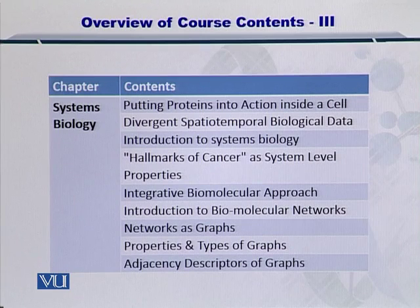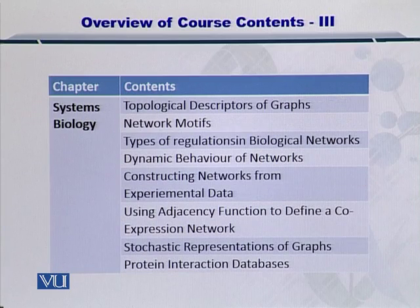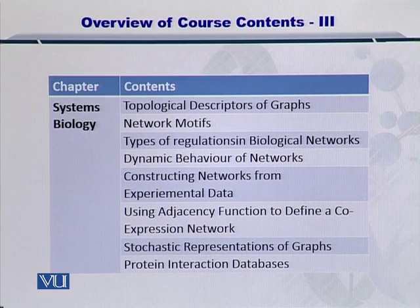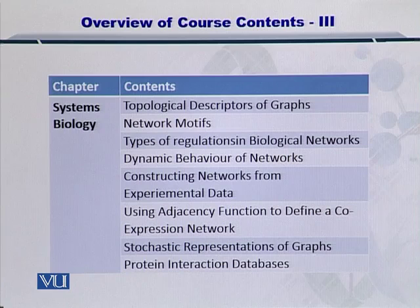To build some foundation, we'll see networks as graphs and look at several of their properties. Adjacency descriptors of these graphs will be introduced and topological definitions will also be included. We'll see how various network motifs exist and their regulatory behaviors in biological networks. The overall dynamical behavior of the networks will also be covered, and we'll see how to construct these networks by looking at experimental data, including how to define a co-expression network and convert that representation into a stochastic graph.